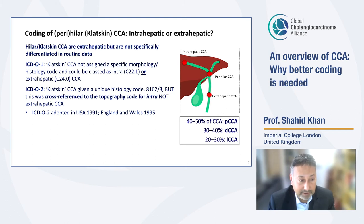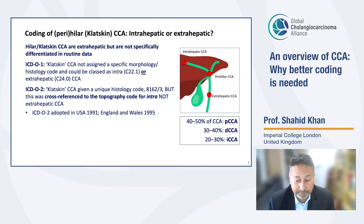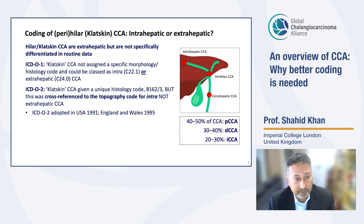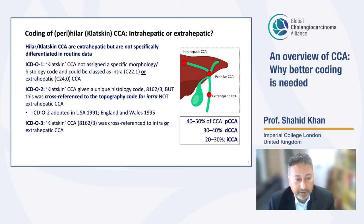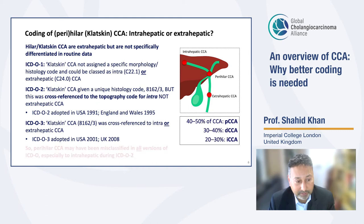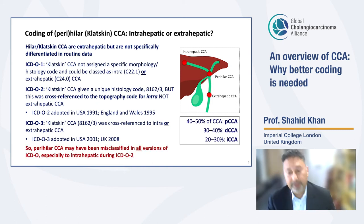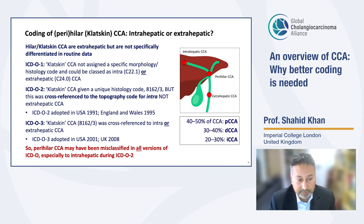ICD and ICDO are taken up and used in different countries at different times. For example, ICD-O2, where Klatskin cholangiocarcinomas were cross-referenced to intra-hepatic, was adopted in the US in 1991 but in England and Wales in 1995. Then ICD-O3 went back and cross-referenced Klatskin cholangiocarcinomas to intra- or extra-hepatic, and was again adopted at different times across countries. In summary, perihilar cholangiocarcinoma — the largest subgroup — may have been misclassified in all versions of ICDO, especially to intra-hepatic during the period where ICD-O2 was used.